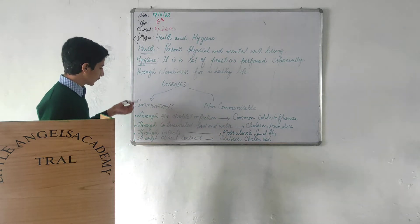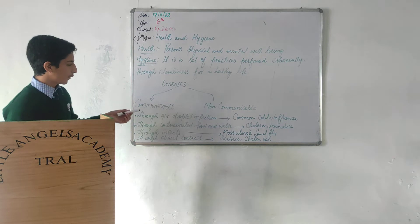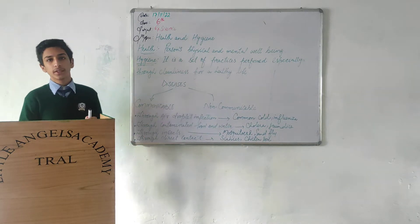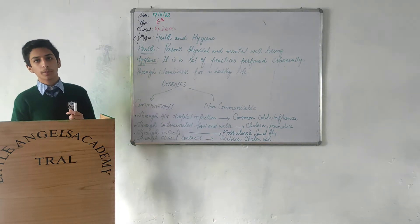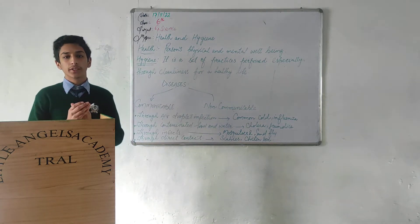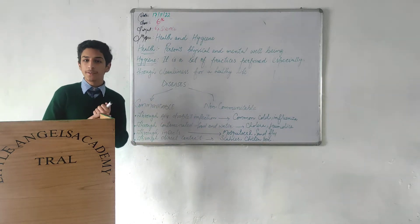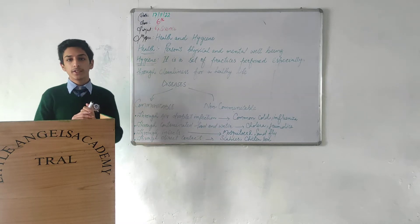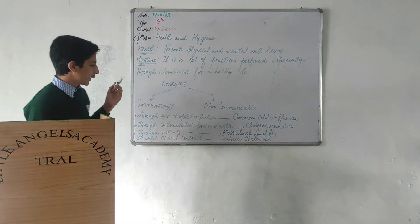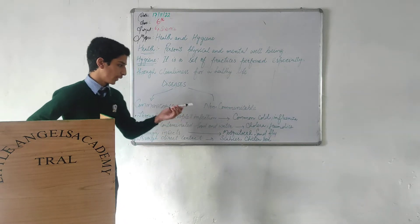There are some modes of communicable disease. Through air droplet infection: when any person sneezes, air droplets come out from his mouth and get merged with air. When any healthy person inhales that air, he gets infected. Some examples of this mode are common cold and influenza.